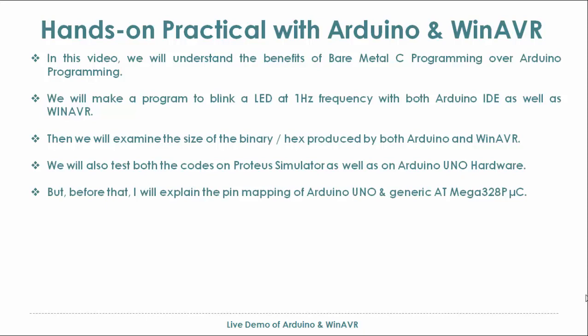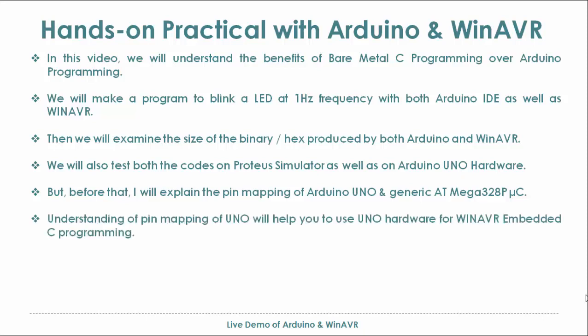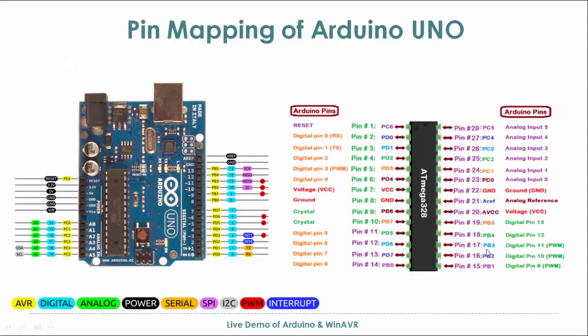Before that I will explain the pin mapping of Arduino Uno and the generic ATmega328P microcontroller. Understanding the pin mapping of the Uno will help you to use Uno hardware for WinAVR embedded C programming. On the left side of the slide you see the Uno hardware — from A0 to A5 these are the analog pins, identified in the controller as PC0, PC1 up to PC5.